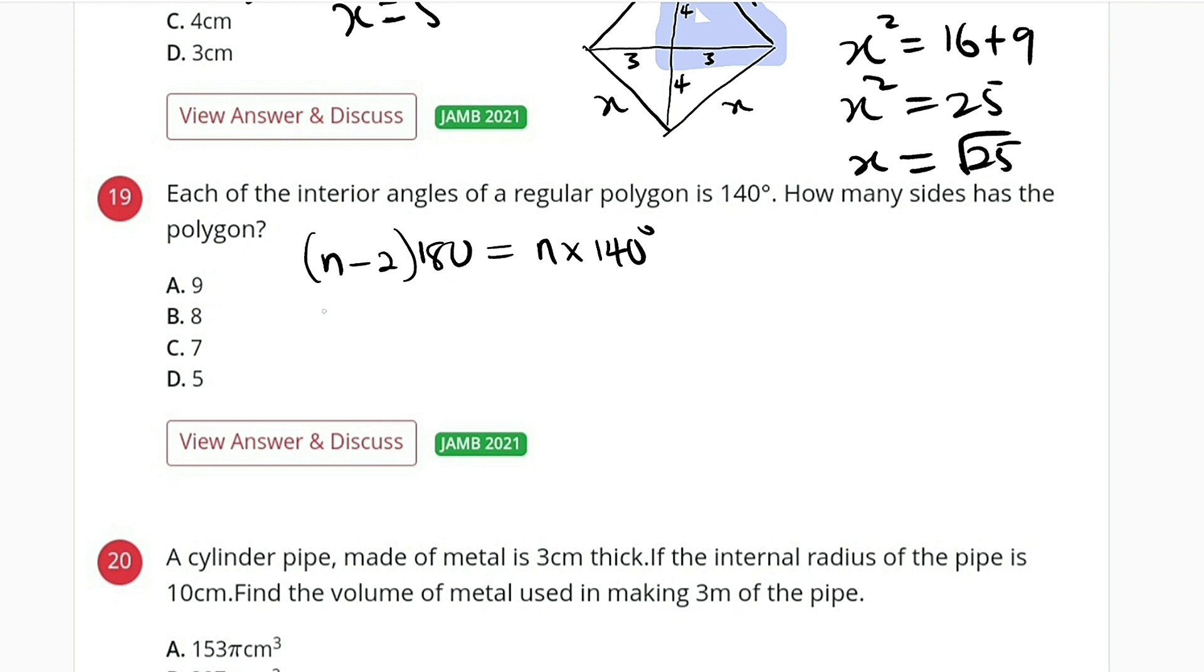If you expand here we have 180n minus 360 is equal to n times 140 which is 140n. We collect the like terms.